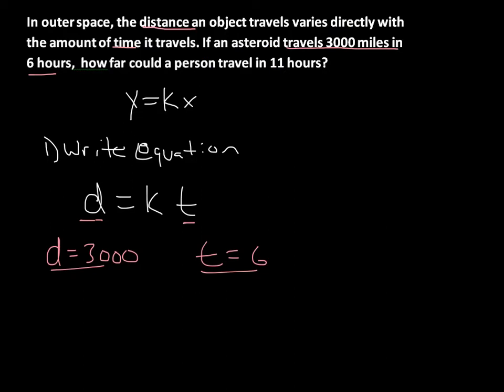So we have 3,000 equals k times t, and for t we're going to put 6.